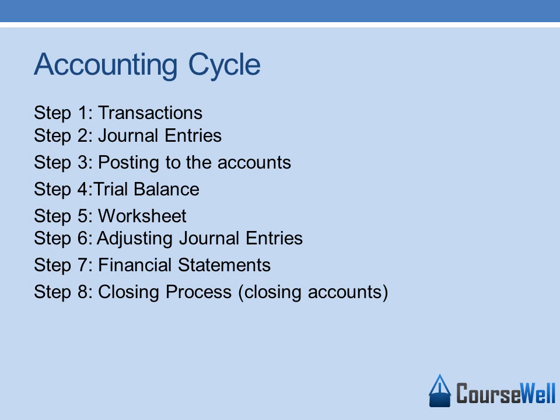The accounting cycle has 8 steps. Step 1 is a transaction — a transaction must occur to start the accounting cycle. A transaction for an organization could be buying land. Step 2: once that transaction occurs, you create a journal entry. Your journal entry for an organization that has purchased land with cash would be to debit land for the amount of the price that you bought the land for, and then credit cash for the amount you paid for the land.